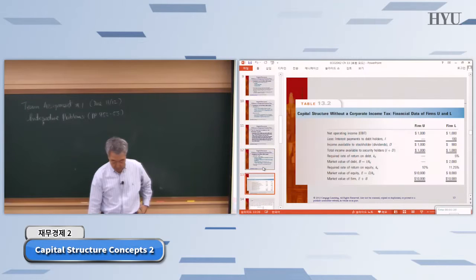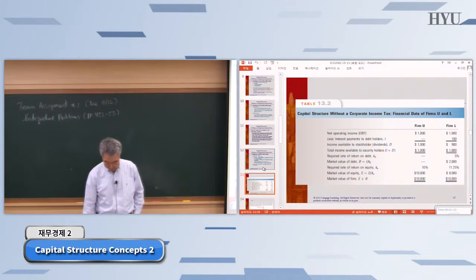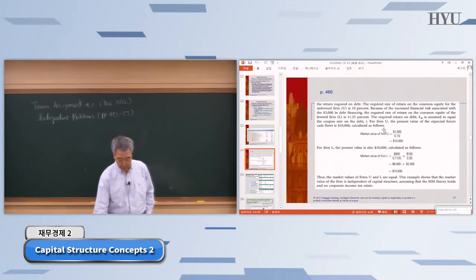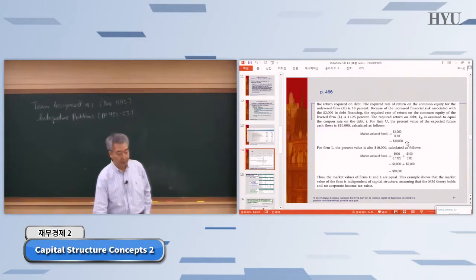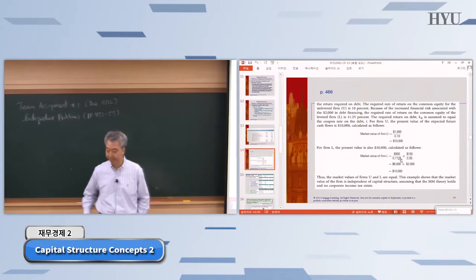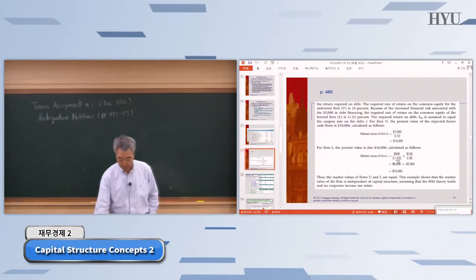Our textbook gives some examples in this table. We were talking about two separate firms: the unlevered firm versus the levered firm. The unlevered firm means there is no debt — it's 100% equity. The levered firm has some debt. In this example, they borrowed $100, so $900 is the equity value and $100 is the debt value.